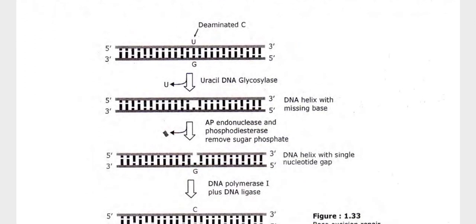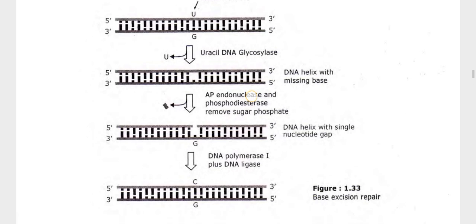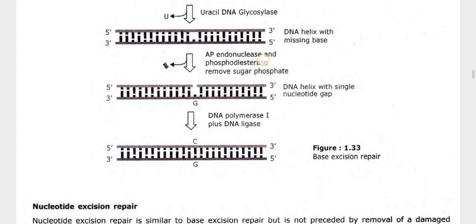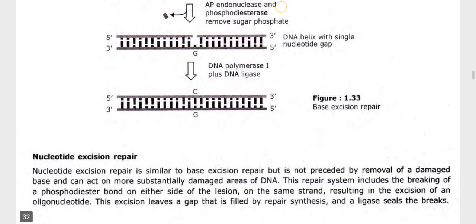The base excision repair steps are: uracil DNA glycosylase removes the base, creating a DNA helix with a missing base; AP endonuclease and phosphodiesterase remove the sugar phosphate, leaving a DNA helix with a single nucleotide gap; DNA polymerase I and DNA ligase then fill and seal the gap.